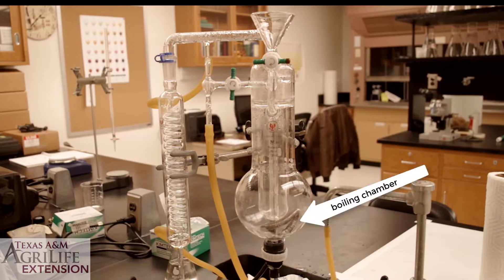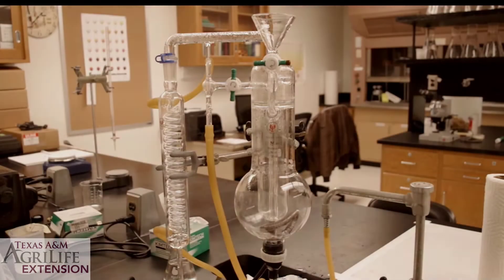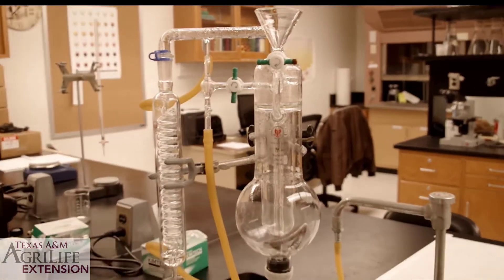On the right we have the boiling chamber. Water needs to go into the boiling chamber in order to heat up the wine sample and volatilize the acetic acid. The wine sample goes into the sample chamber located within the boiling chamber. We have access to both these chambers through the funnel at the top.